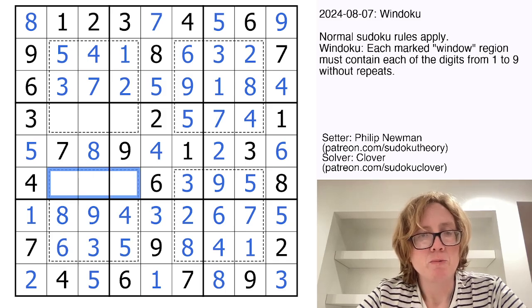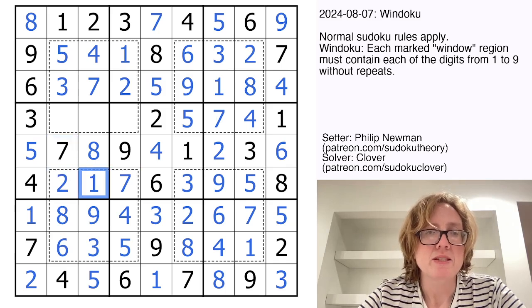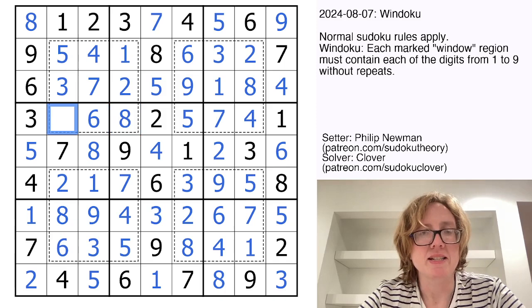In this row, we still need one, two, and seven. The seven can only go here because of the seven in the region. That's a two and a one. Our last digit in this region will be an eight. And these digits will be a six and a nine.